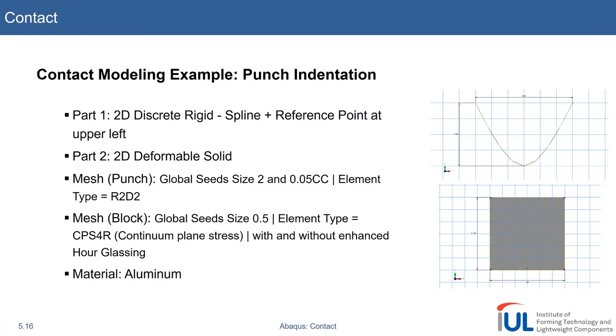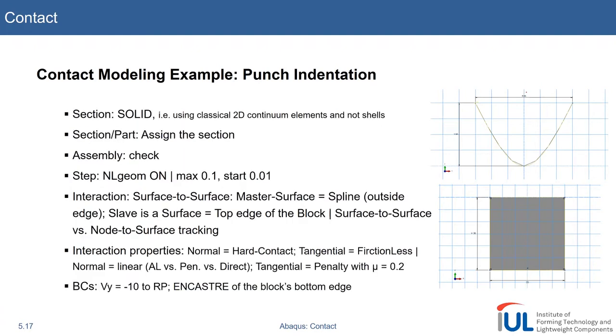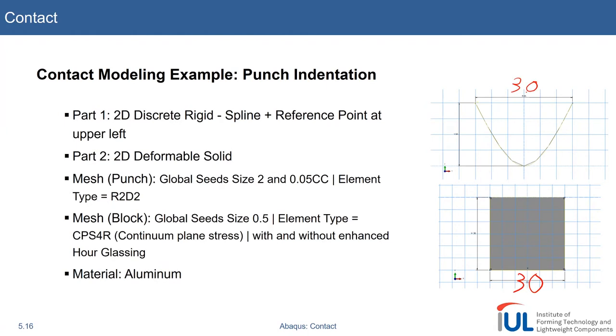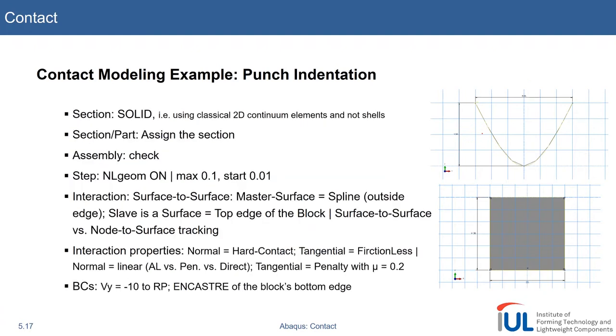The modeling example is quite simple at this point. We will use a simple quadratic block with an edge length of 30 and a spline-like punch where we only will model the outer spline, and it has a width of 30 and a height of 20. So, quite simple to set up.